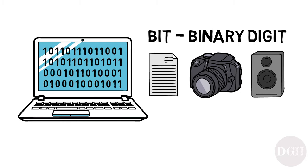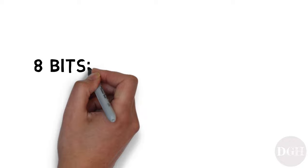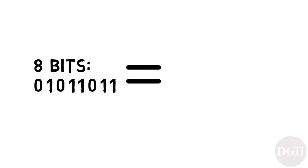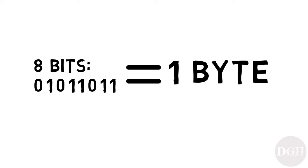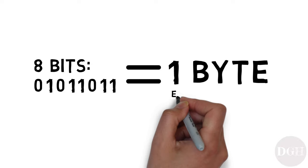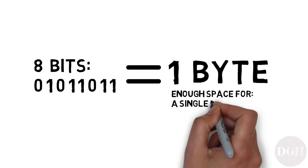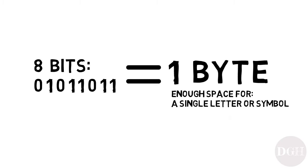For our next term: if you take eight bits — eight of these ones and zeros — and put them together, that's called a byte. It sounds like a mouthful of food, but it's spelled with a Y and it refers to eight bits put together. You can think of one byte as the amount of space required to store a single letter or symbol in a text document.